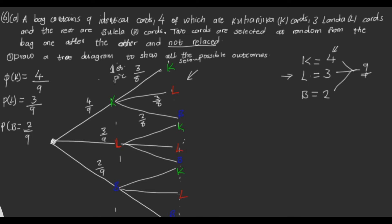For the second branch, assuming Landa was picked first without replacement: since there were 3 Landa cards and one was taken, L becomes 2/8. V stays 2/8 and K stays 4/8, because this time we assume Landa was picked. For the third branch, we assume Vulela was picked first.